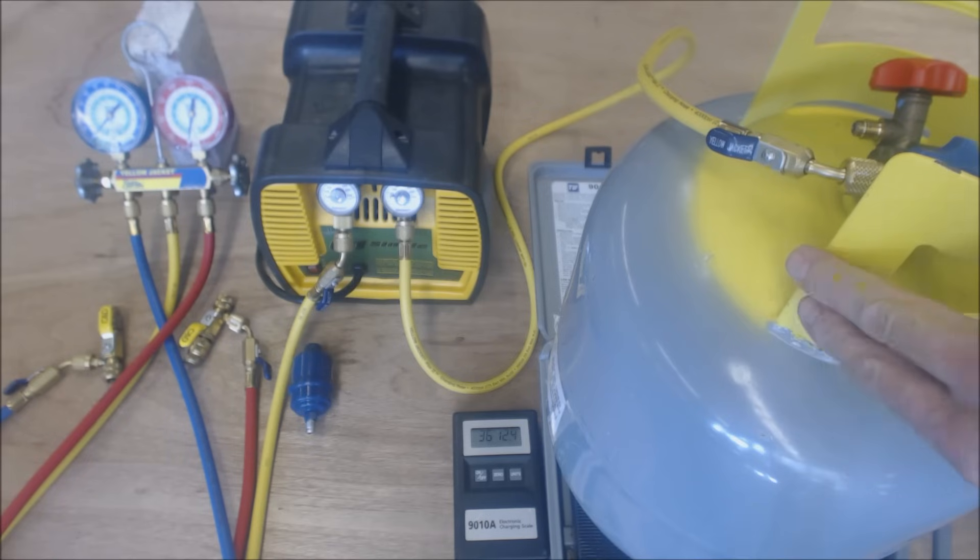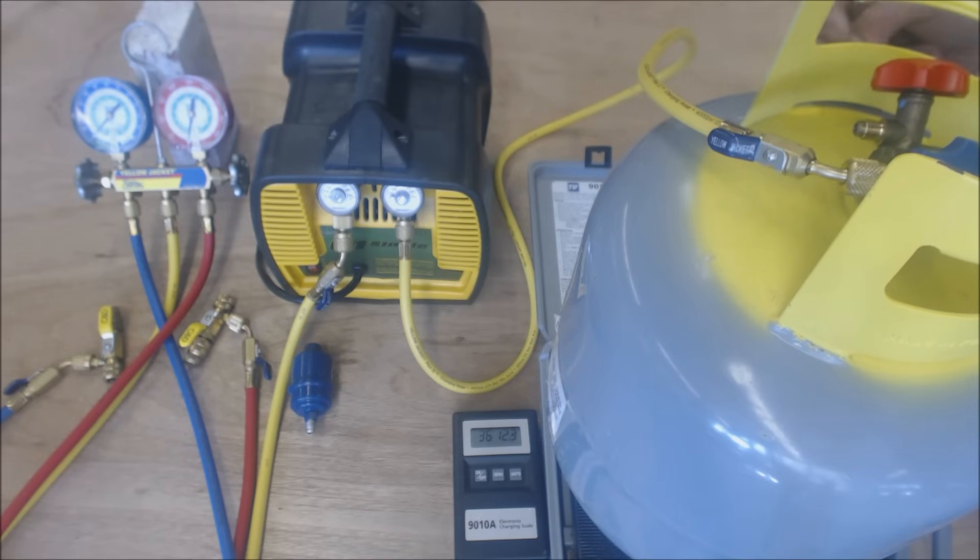On the side of the tank, either right here or right back here, you're going to find a tare weight. A lot of times they're right around 26 to 28 pounds. So you have to find the tare weight. This one actually says 27.9 pounds, so that means about 28 pounds.